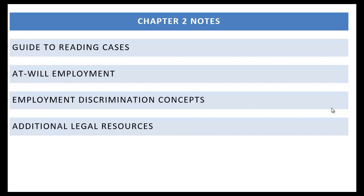Hi everyone. In chapter 2 we discuss the court system at the federal level. We give a little bit of a guide into how to read case studies you'll find in your book and online. We'll discuss an overview of the at-will work environment. We'll talk about employment discrimination concepts at a high level.